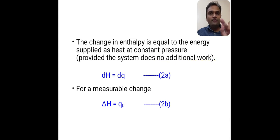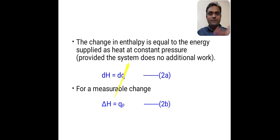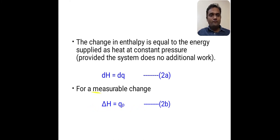So in the form of an equation, we can write dH is equal to dQ, where dH is the change in enthalpy and dQ is the change in heat. And for a measurable change, we can write delta H is equal to QP, where instead of dH we write delta H and instead of dQ we write QP.